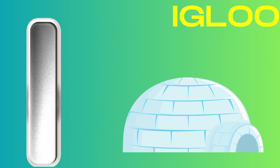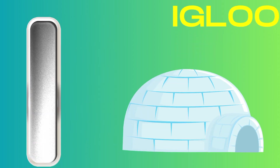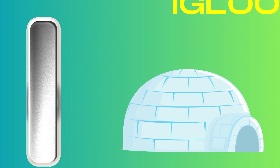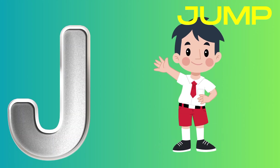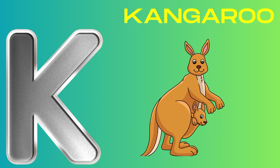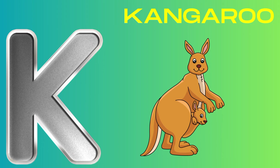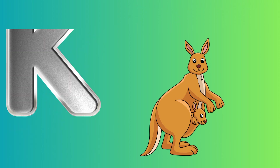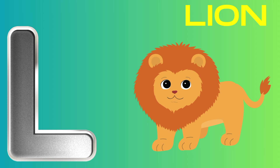I is for igloo, i-i-igloo. J is for jump, j-j-jump. K is for kangaroo, k-k-kangaroo. L is for lion, l-l-lion.